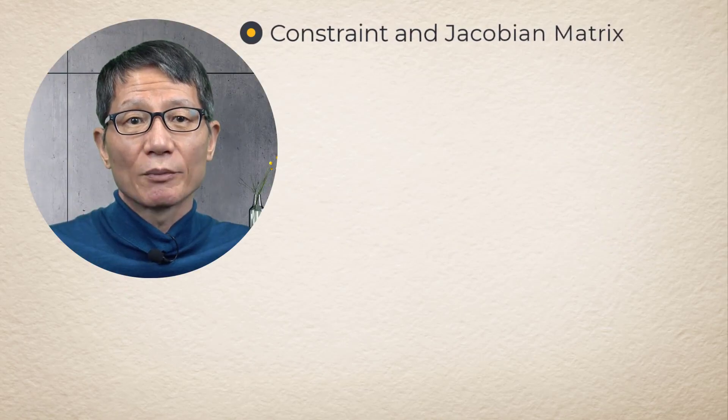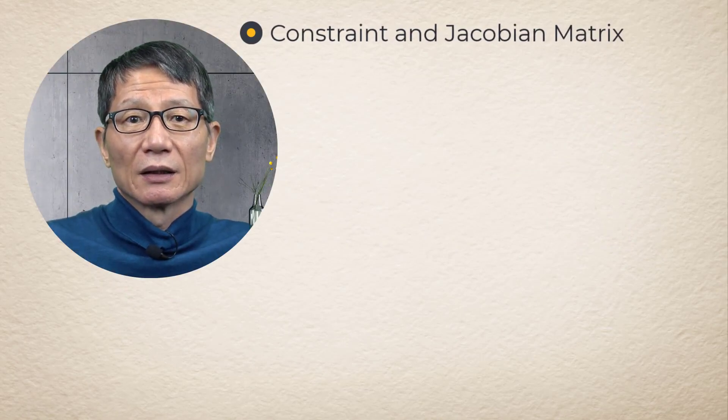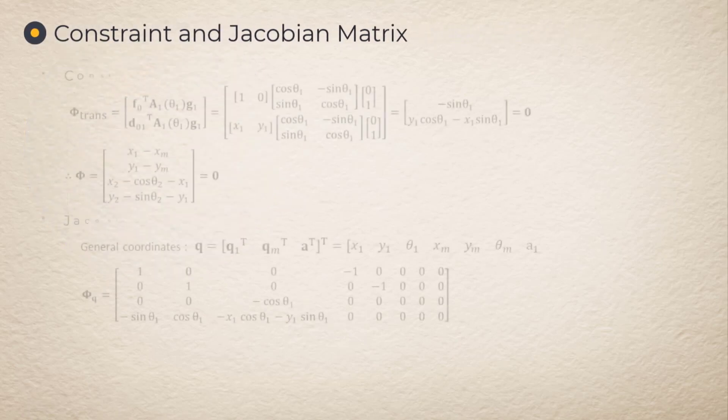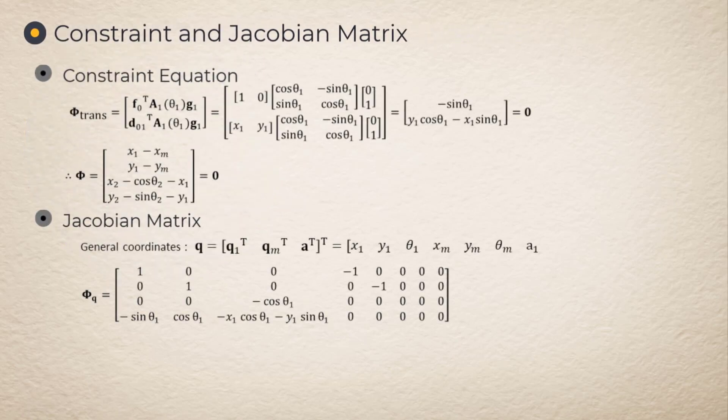Constraint and Jacobian matrix. The joint constraint and their Jacobian matrix are obtained as follows.